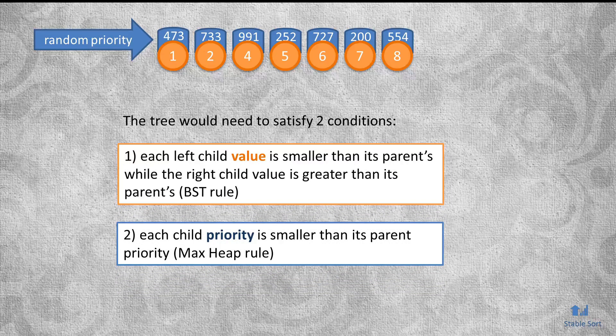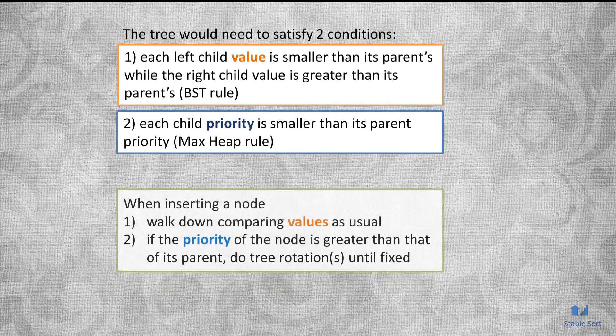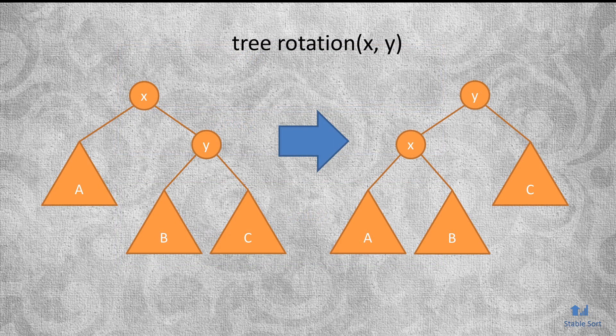So how do we ensure that both of these conditions are satisfied? When inserting a node, we still walk down from the root following the rules of a standard binary search tree, comparing values to each other. We go left if the value is smaller than the parent, right if the value is bigger than the parent, and eventually create a new leaf. Then, if we find that the priority of the node is greater than the parent's priority, we do tree rotations to fix this. If you remember, tree rotations work like this.